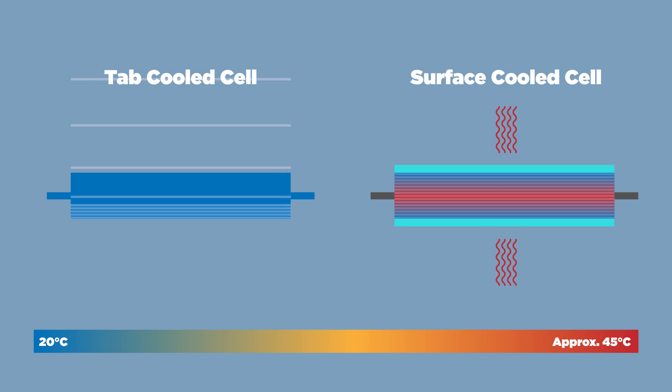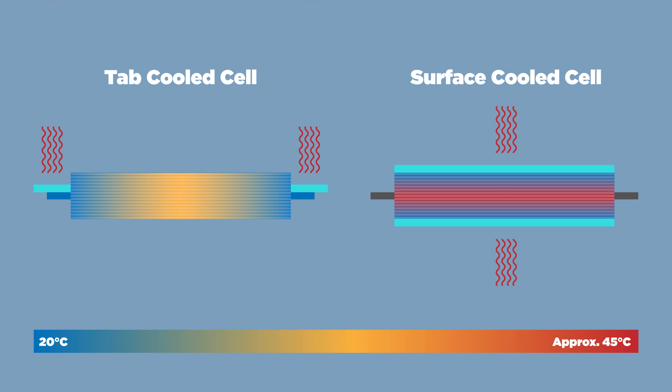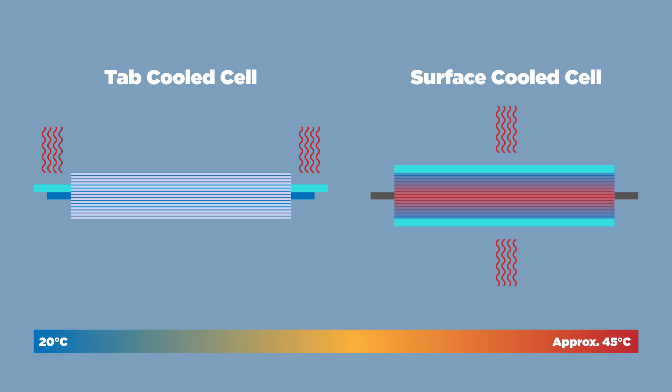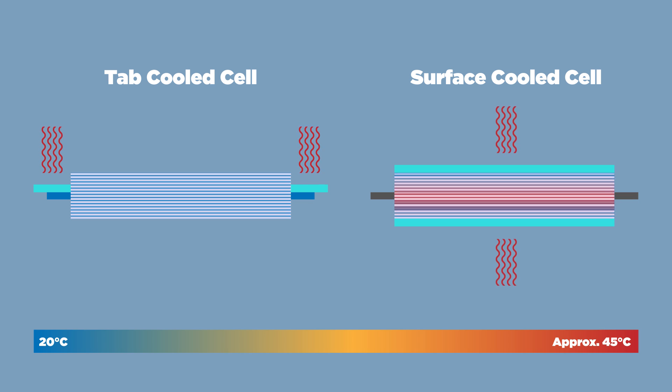For tab cooling, since all the layers are treated the same and provide the same current for the whole discharge, the cell behaves much more homogeneously. For tab cooling, the layers are united, whereas for surface cooling, divided they fall.